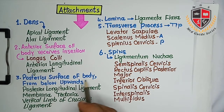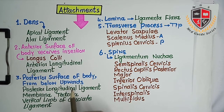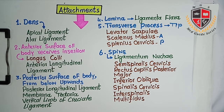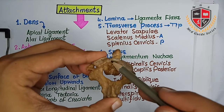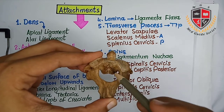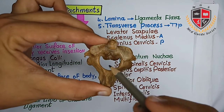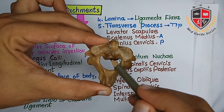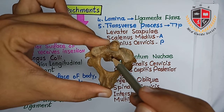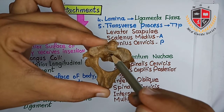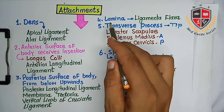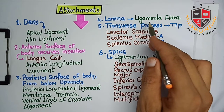The posterior surface of the body provides attachment from below upwards to the posterior longitudinal ligament, membrana tectoria, and vertical limb of cruciate ligament. This is the posterior surface of the body. From below upwards, it gives attachment to the posterior longitudinal ligament, membrana tectoria, and vertical limb of cruciate ligament. The lamina gives attachment to ligamenta flava.